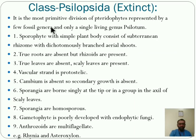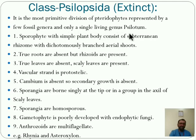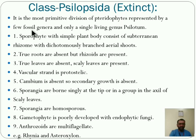The first one is Psilopsida — it is the extinct class. It is the most primitive division of Pteridophyta, represented by few fossil genera, and only a single living genus, Psilotum. That means here only one living plant is present in this group. All other plants or genera are in fossil form.